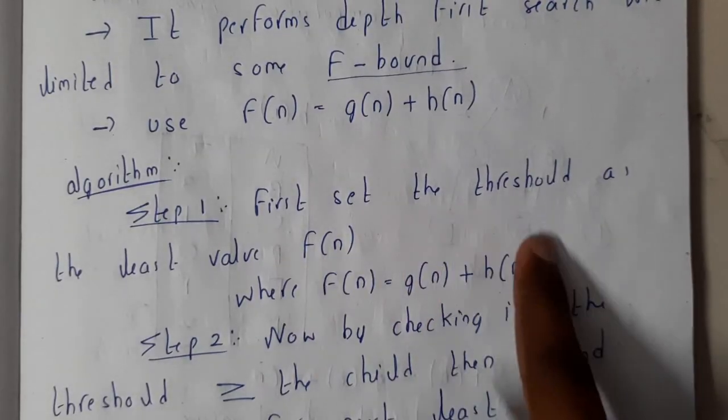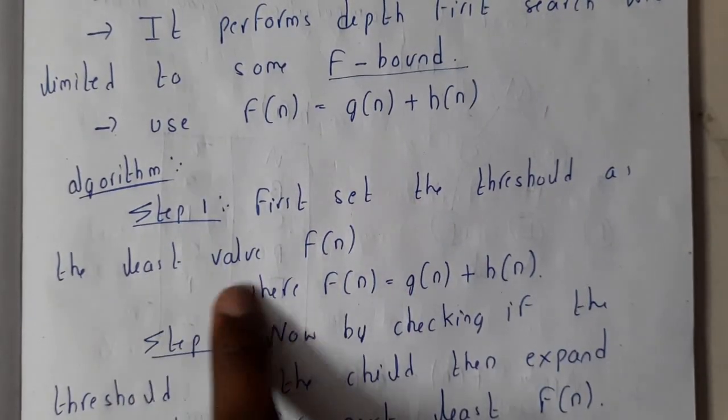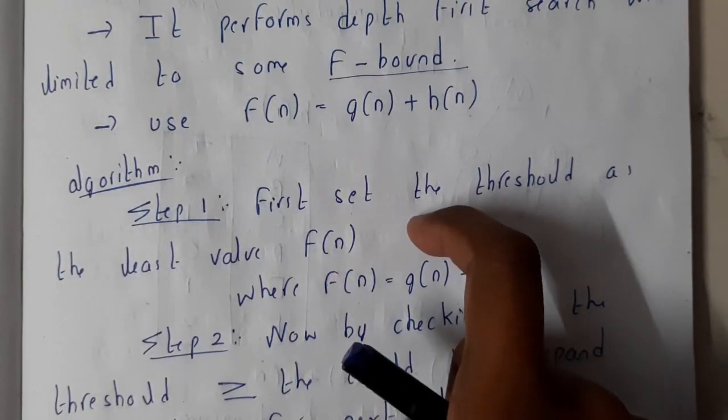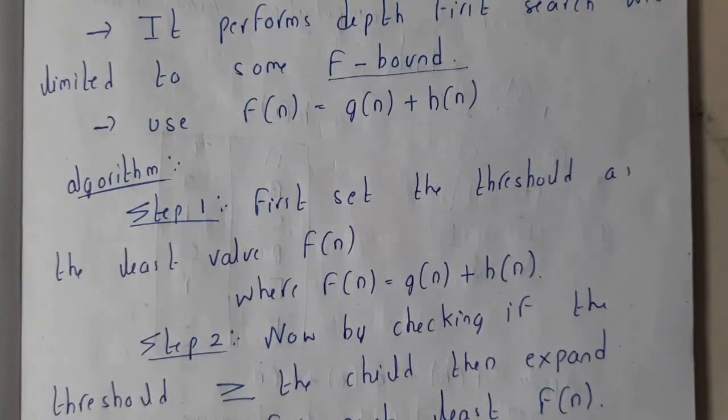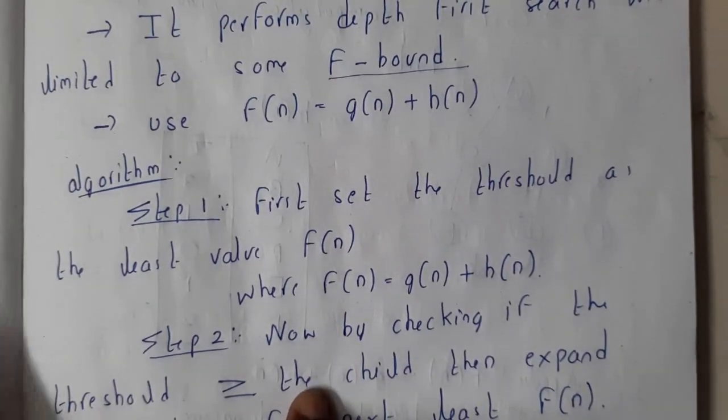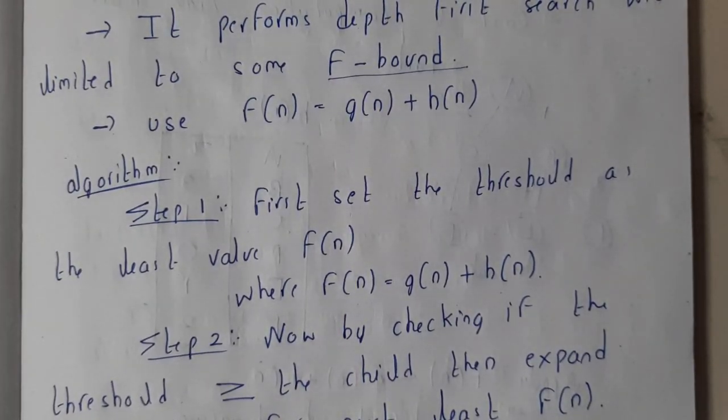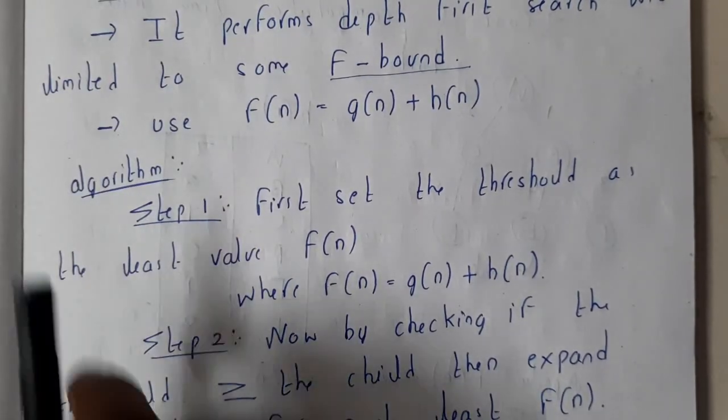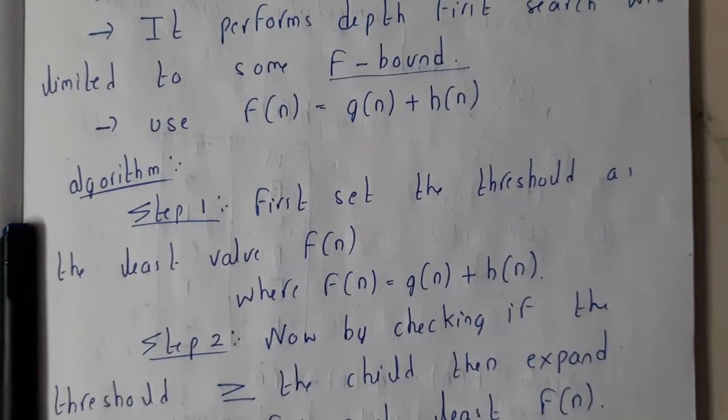So the algorithm will be in this way: first set the threshold as the least value of f(n). So basically once the graph is given in this method, you can directly calculate the values of f(n). So even in the previous problem also you can do, but if it is asked for 10 marks, doing it will take almost like in this sheet, in this definition sheet, almost in the half page you can complete the solution for 10 marks.